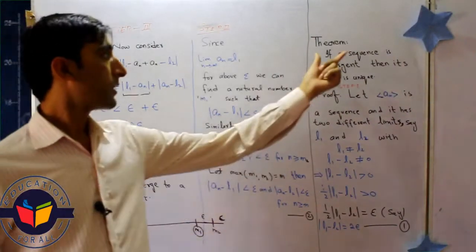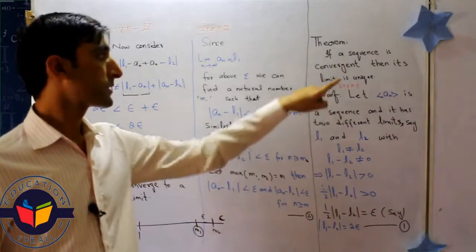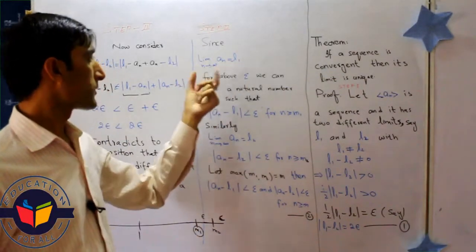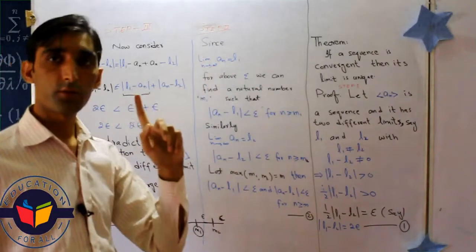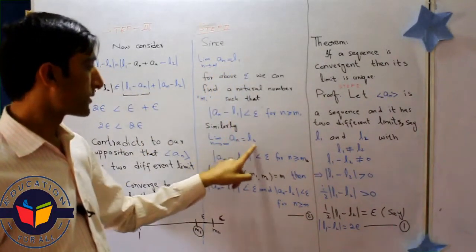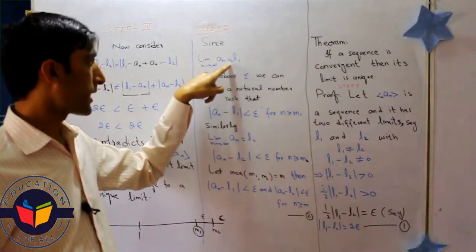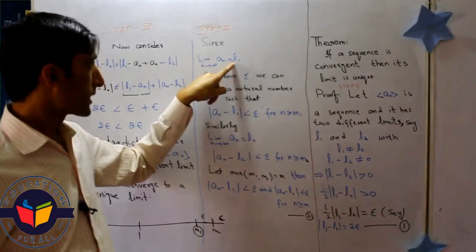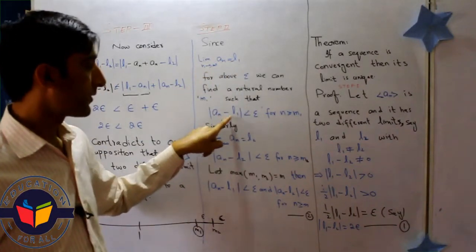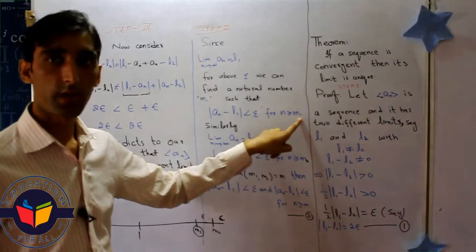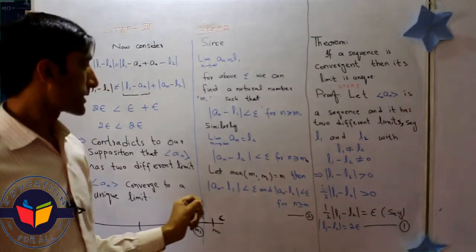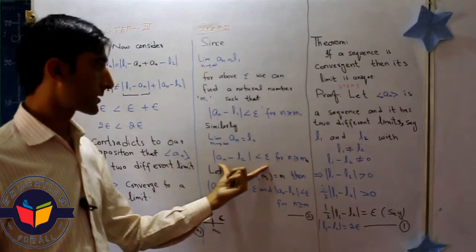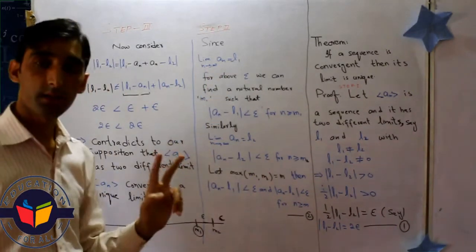Next, we move on to step two. Step two is given in our theorem: that it is convergent. Now in the second step, if a_n has two limits, first is l1 and second is l2, we know the definition of the limit. We can write this one in this form: for some n is greater than or equal to m1 in the first case.